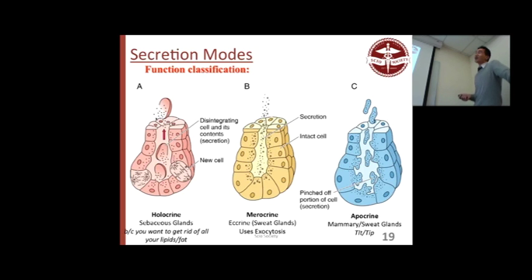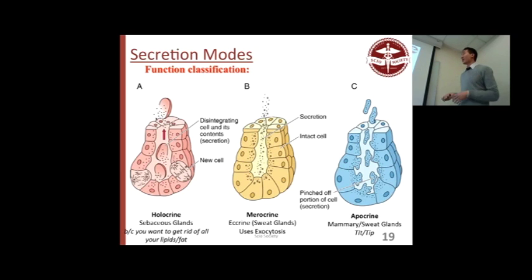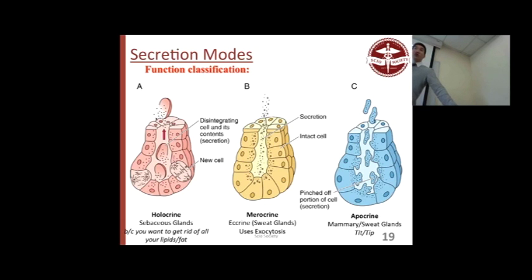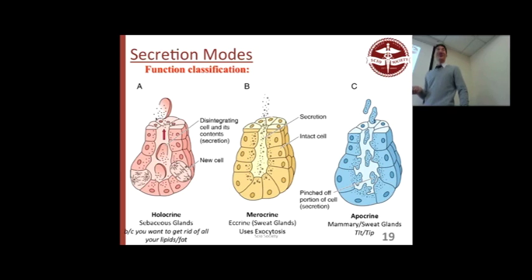Secretion modes: holocrine — you lose the whole cell; seen in sebaceous glands, think acne. Merocrine — you're not losing any cellular material, just secreting via exocytosis. Eccrine is a specialized type of merocrine; they're sweat glands. Apocrine — you take the tip off; found in mammary glands — think 'pinched off' or 'tip.'